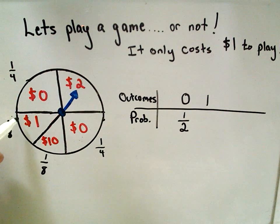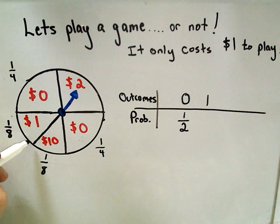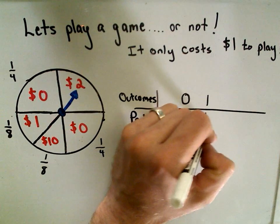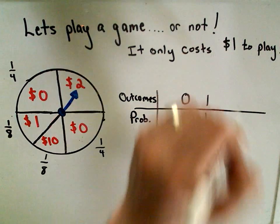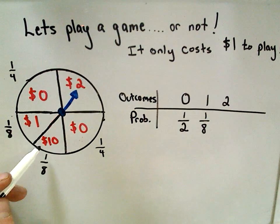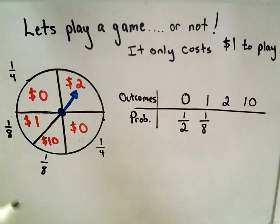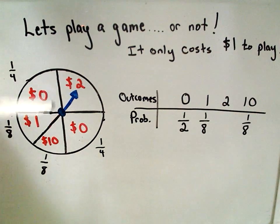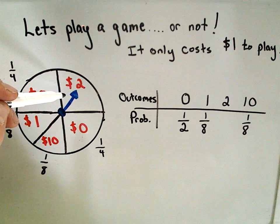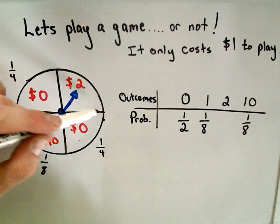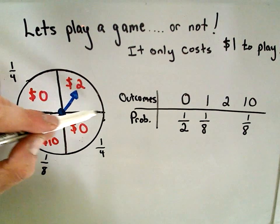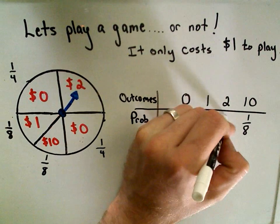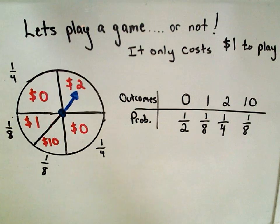Okay, so it says the probability of me falling in the region where I would win $1 would be one-eighth. Likewise, the probability of me winning $10 would have probability one-eighth. And I think the only other possibility would be to win $2, and again, that takes up one-fourth of the circle. So the probability that I would win $2 is one-fourth.